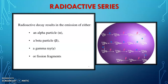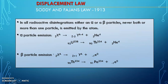Now, what happens when an element emits an alpha particle? Is there any difference when it is emitting a beta particle? In a radioactive disintegration process, when there is an alpha particle emission, we can see that the mass number is getting lowered by 4. Mass number is represented by capital A and atomic number by capital Z. When alpha particle emission is going on, the mass number is reduced by 4 and the atomic number is reduced by 2.